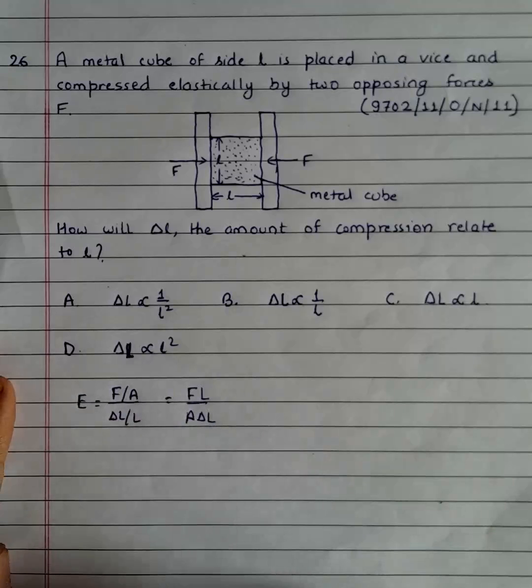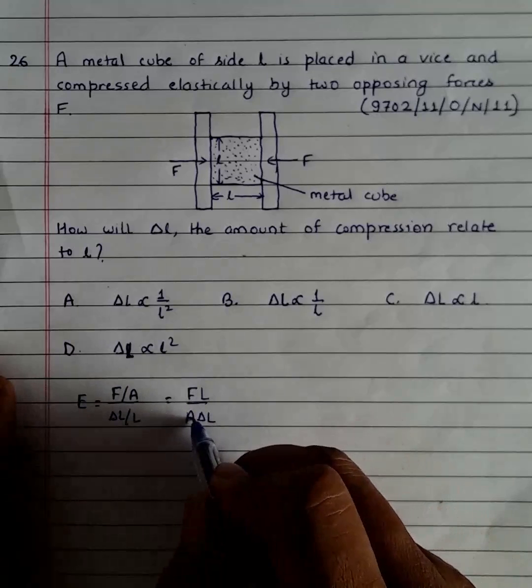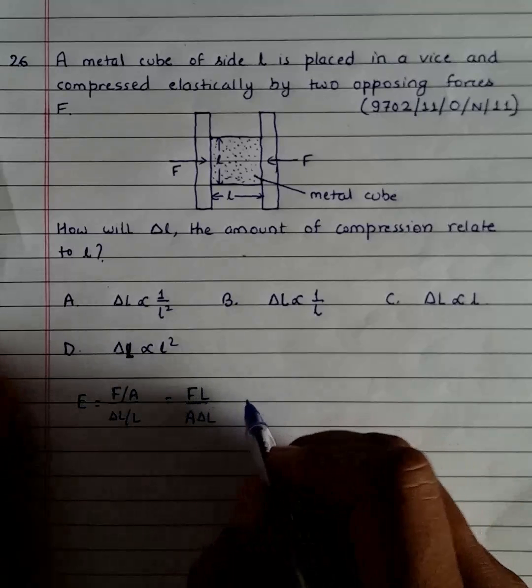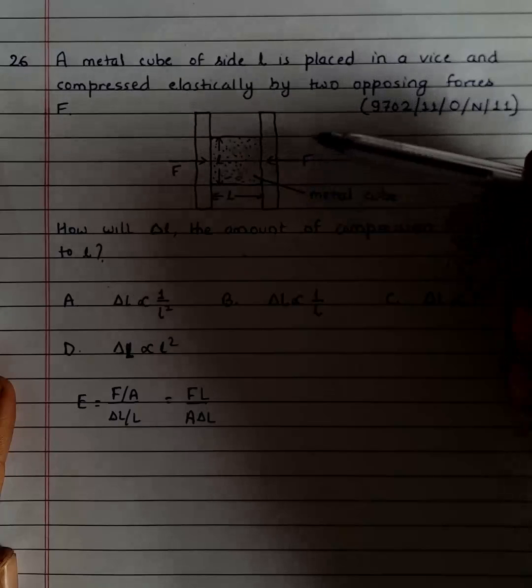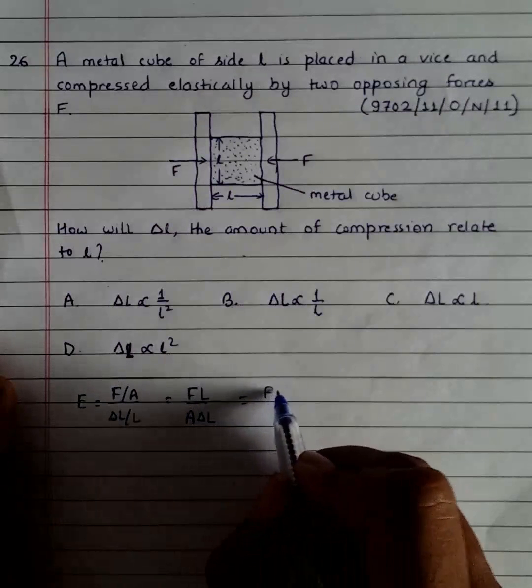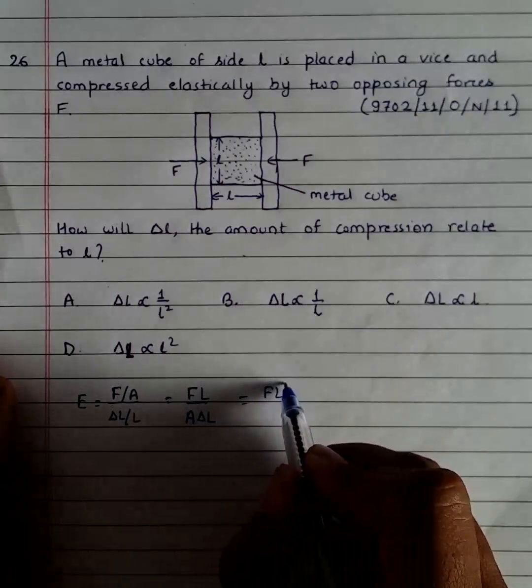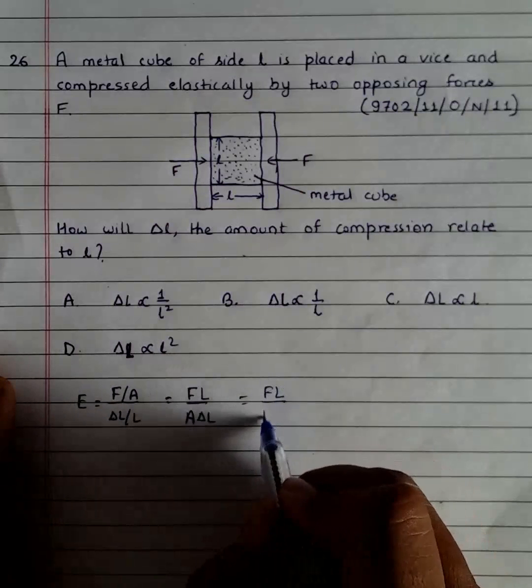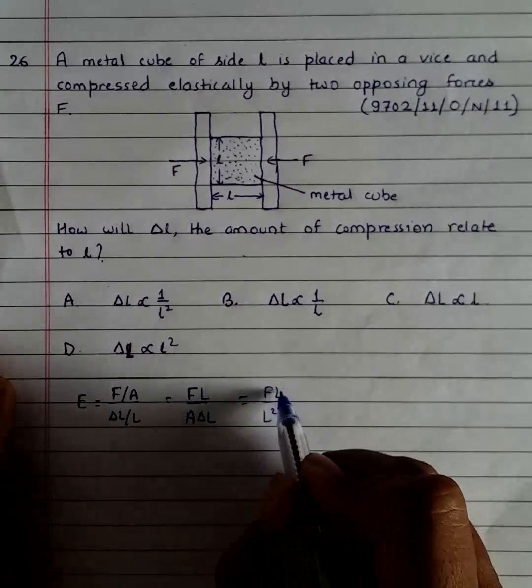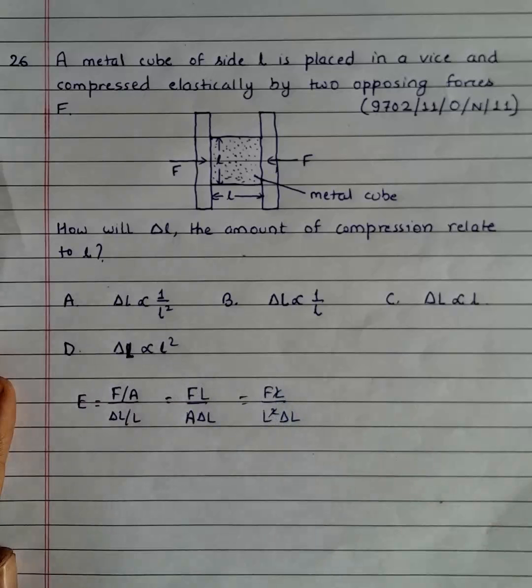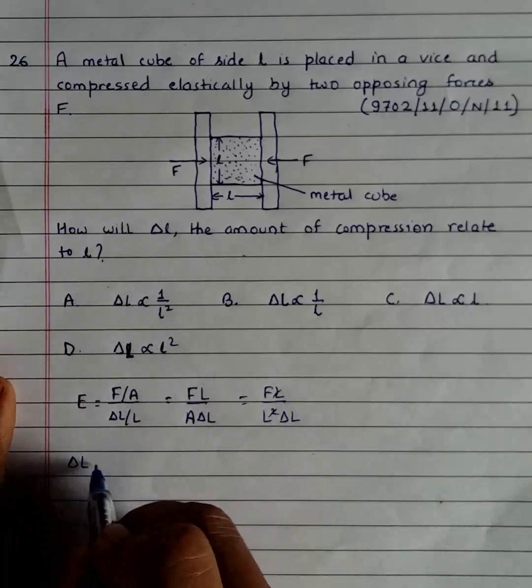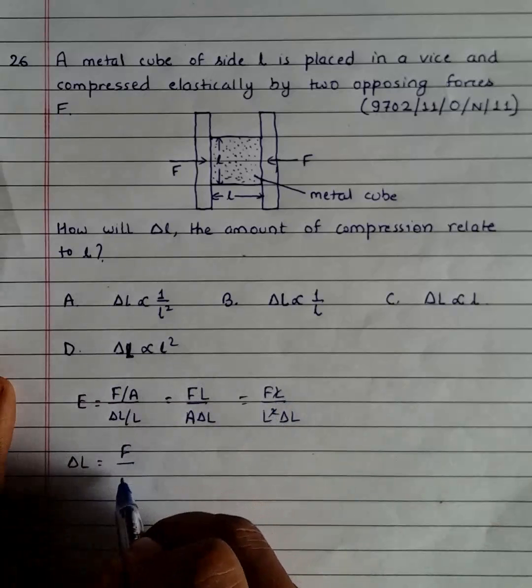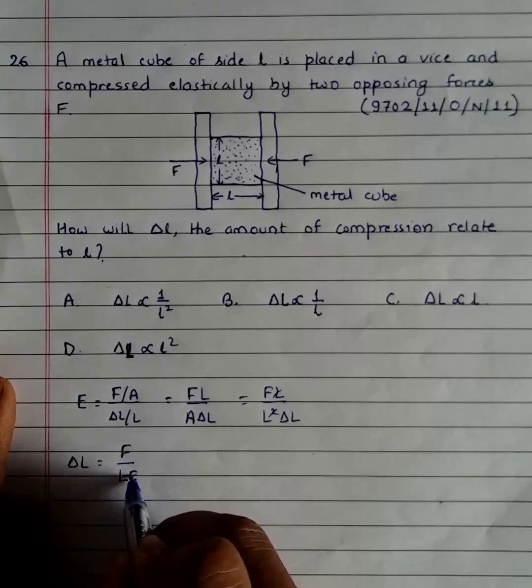The cross-section area A here will be equal to L², so it's equal to F*L = L²*ΔL*E. L and L cancel out, so what I'll have is ΔL equals F divided by L times E, or ΔL = F/(L*E).